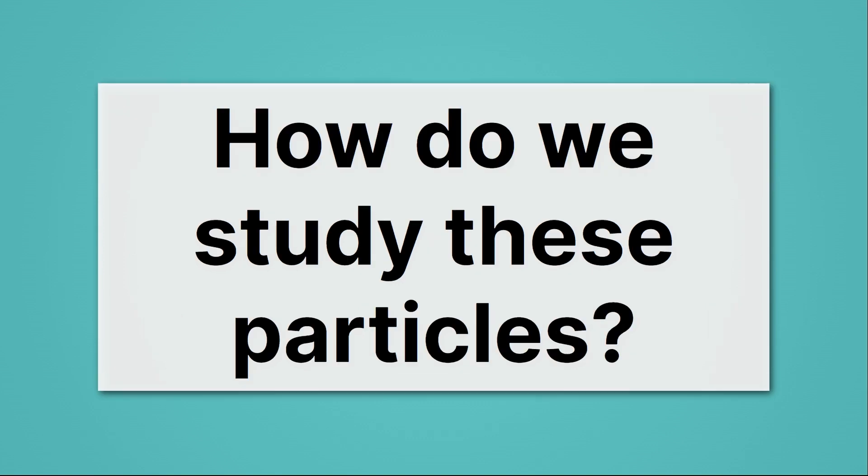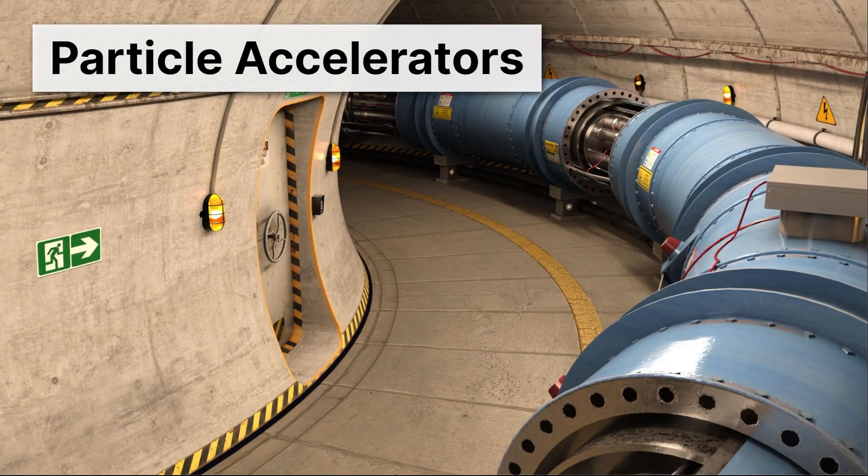Which raises the question, how do we study these particles anyways? How would we look for the graviton? We study these things with particle accelerators, which you see here as this blue tube, which is bending. This can bend into an enormous ring that can be up to 16 miles long. And particles move through these tubes at speeds very near the speed of light and collide. And when they do, they create huge numbers of particles. And that's how we've discovered all of these strange things we've looked at in this video.